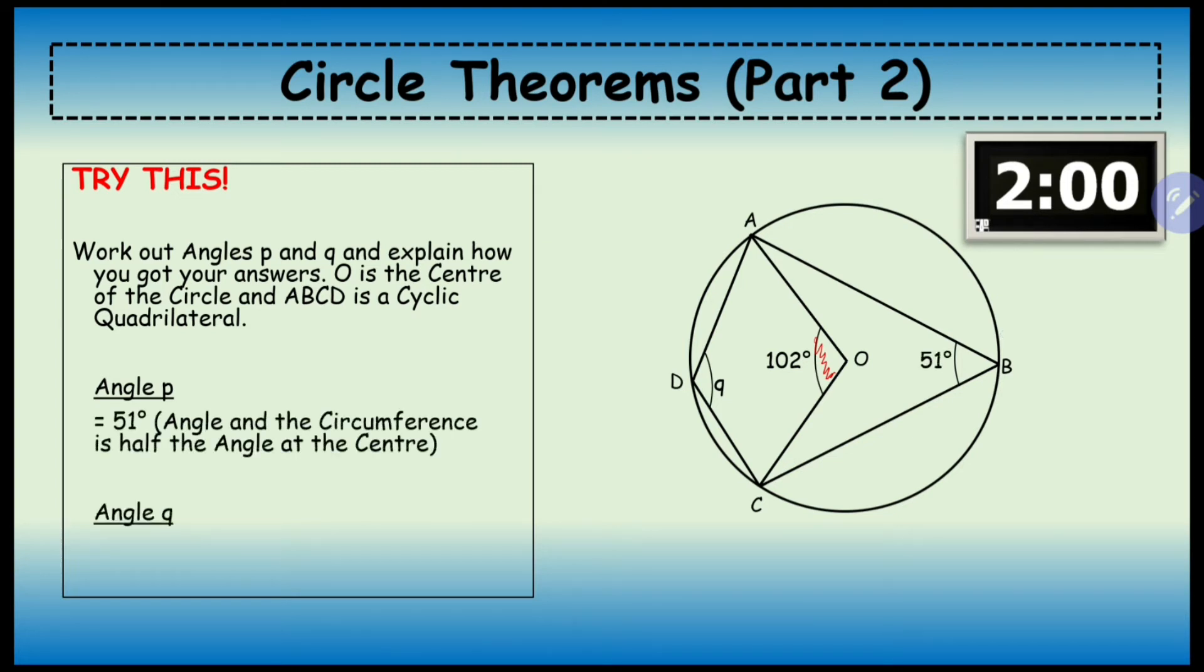Okay, then we're going to work out angle q. Now if you think about this, we have a quadrilateral, and q is the opposite angle to 51. So q and 51, when added together, should equal 180 degrees, and that answer is going to be 129 because opposite angles in a cyclic quadrilateral add up to 180 degrees.